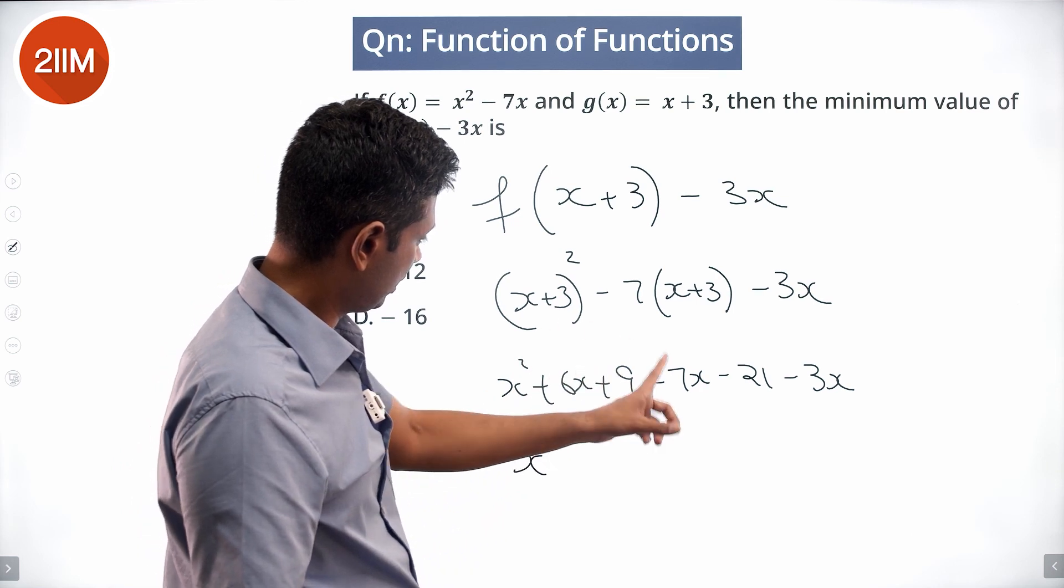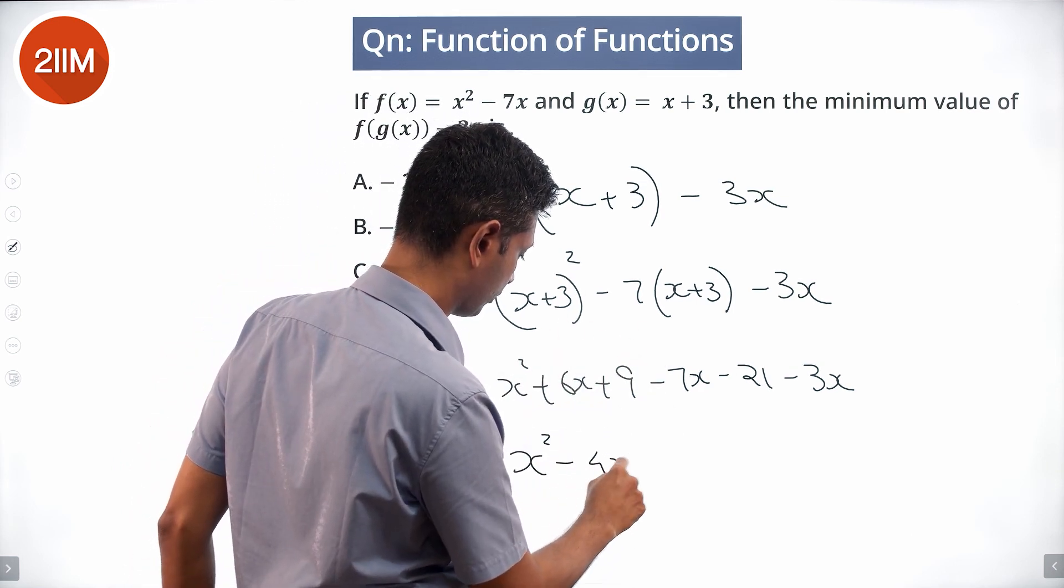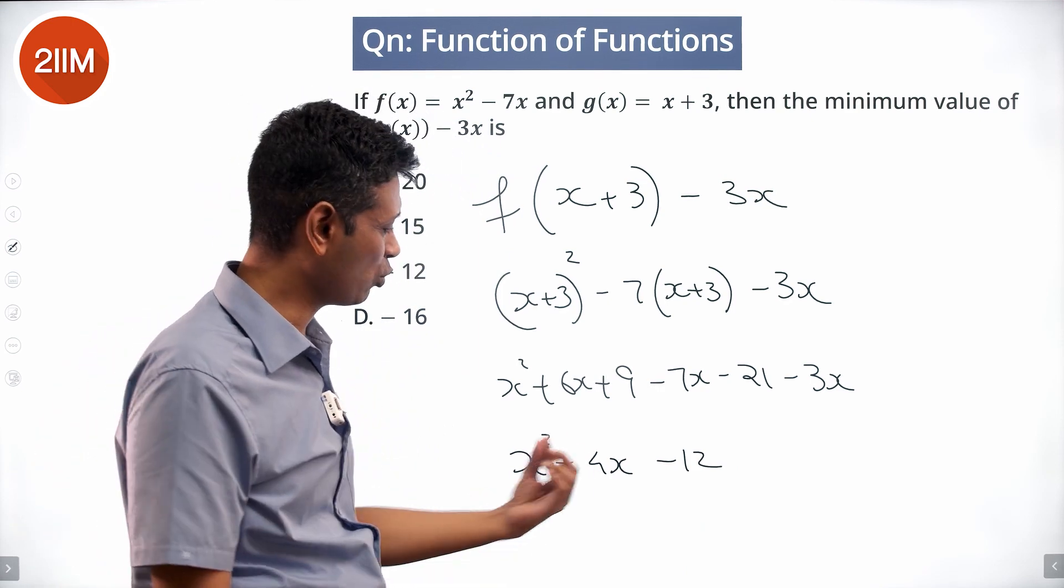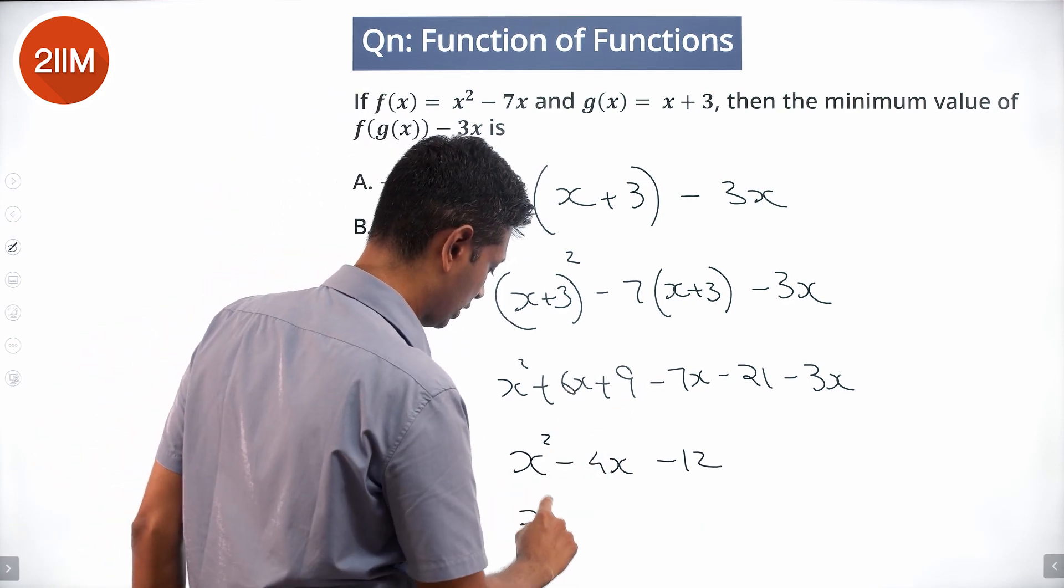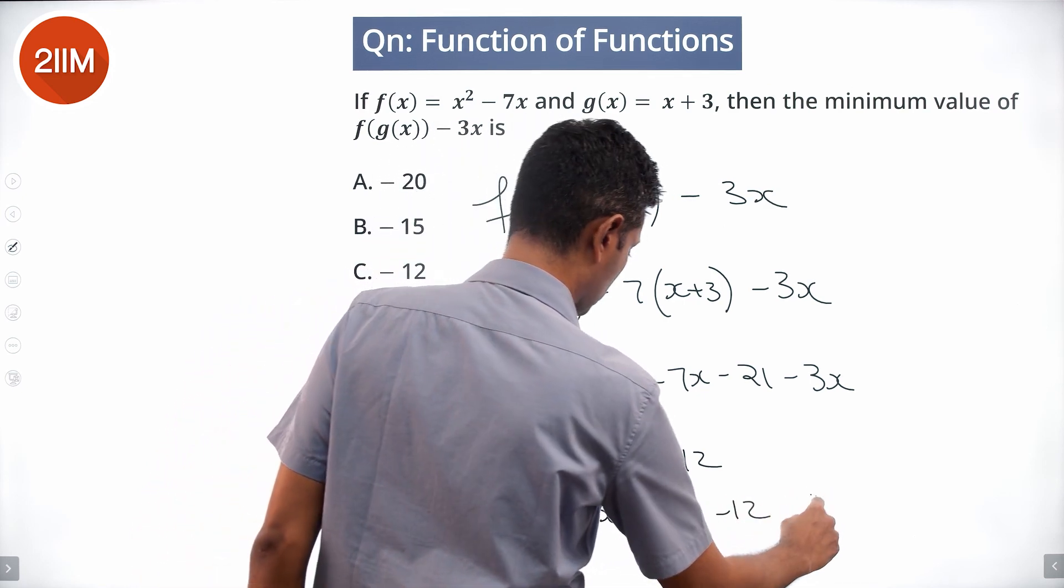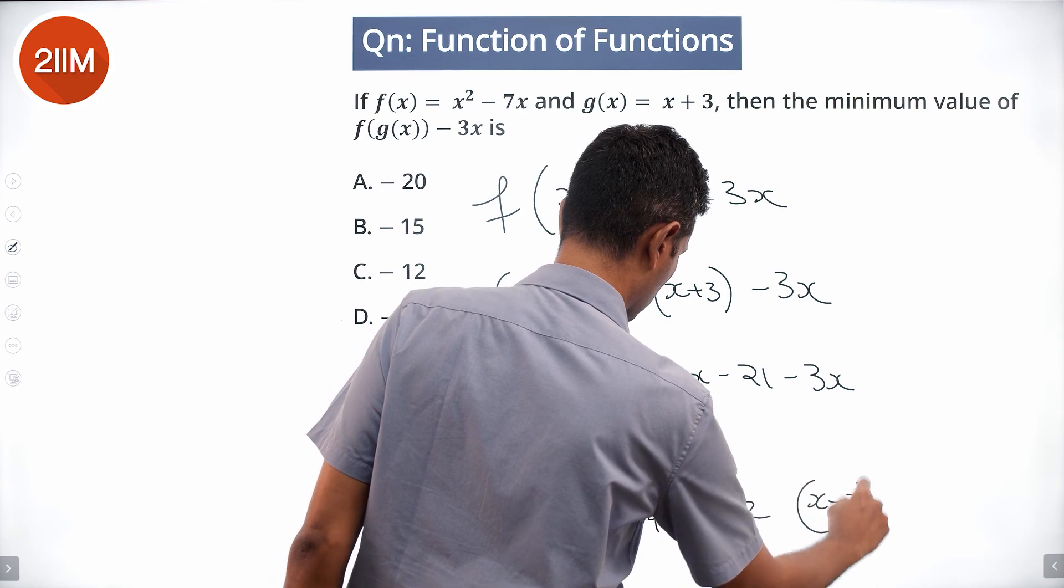6x minus 7x is minus x, minus 4x, minus 12. Simple completion of squares: x squared minus 4x plus 4. This is x squared minus 4x plus 4 minus 4 minus 12. This is x minus 2 the whole